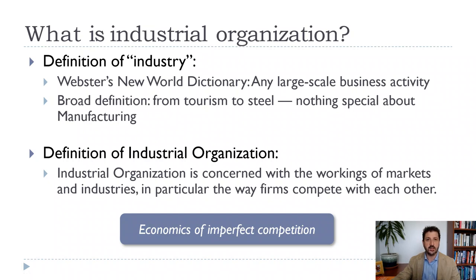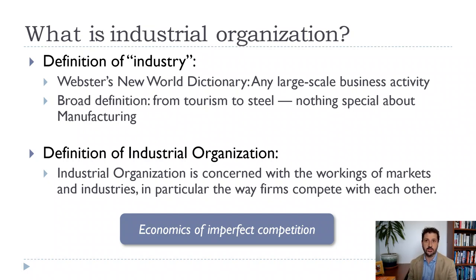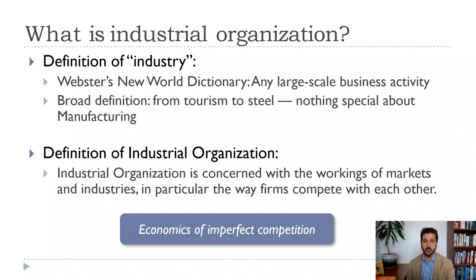Industrial Organization is kind of an odd name for the course. If you take an industrial organization course in the College of Business or something, it's going to be something very different. It might be a better term these days to call it market organization or market competition. Industry is really about manufacturing, and manufacturing was the original focus of industrial organization. But now as the United States and other advanced economies produce less manufactured goods and more services, we want to expand our definition and look at lots of different types of markets — restaurants, financial services, entertainment — we want to be able to talk about all sorts of markets in I.O.